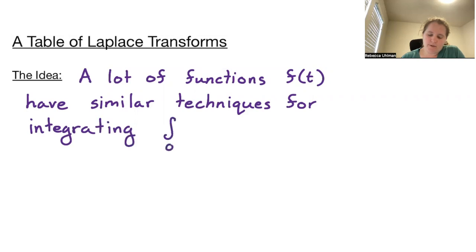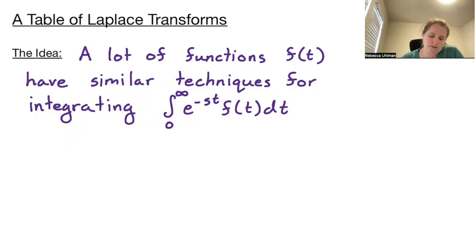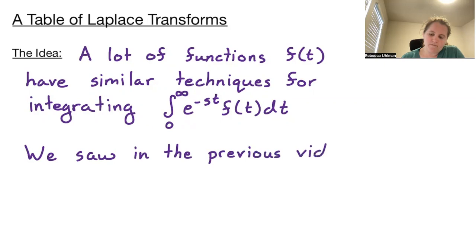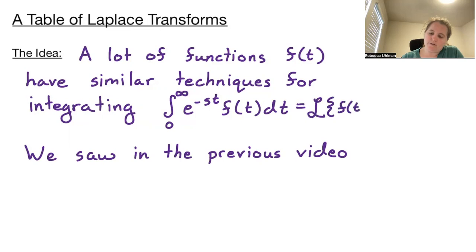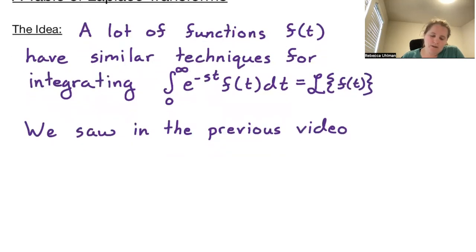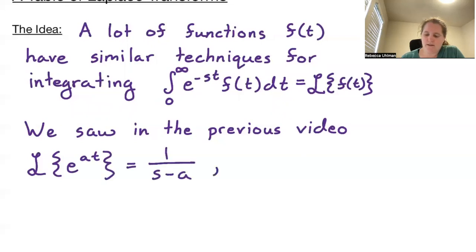For the Laplace transform, we evaluate the integral from 0 to infinity of e to the negative st times f of t dt. As we saw in the previous video, this integral is the Laplace transform of lowercase f of t. We saw that the Laplace transform of e to the at was just 1 over s minus a, defined for s greater than a.